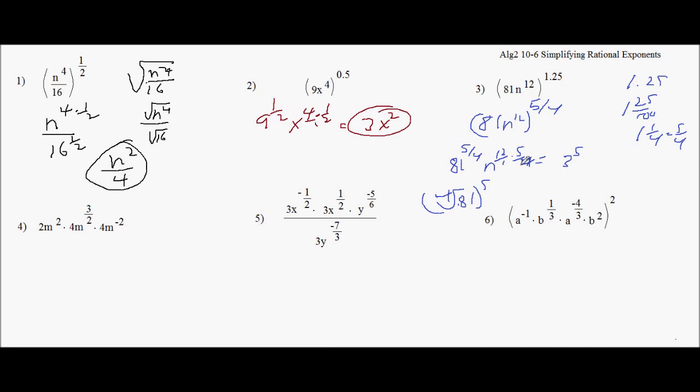And then this, 4 cancels this 12, and I get 3. So I get n to the 15th.